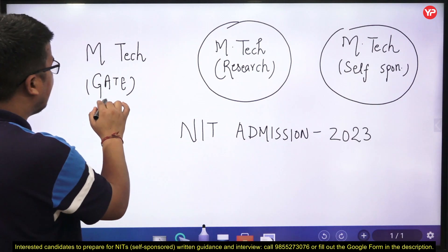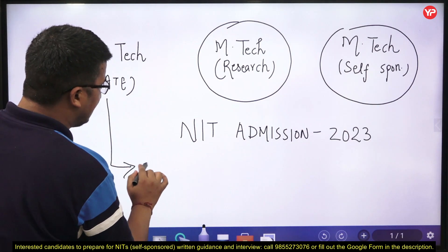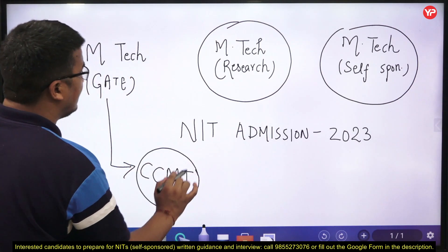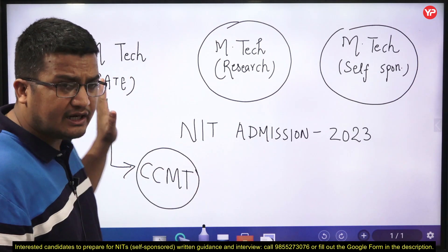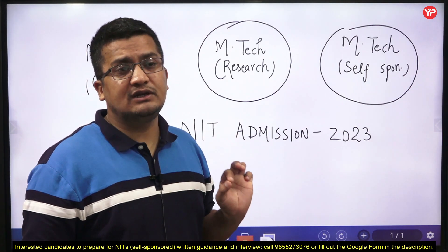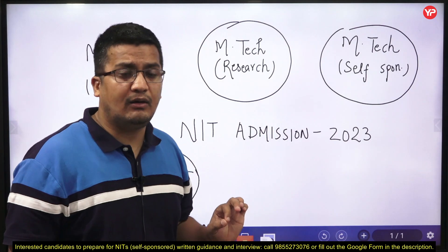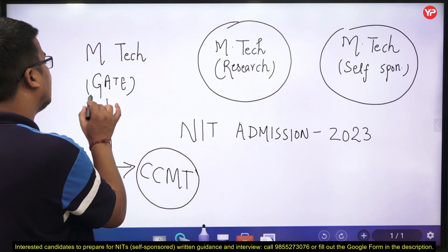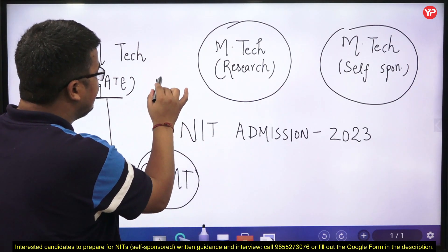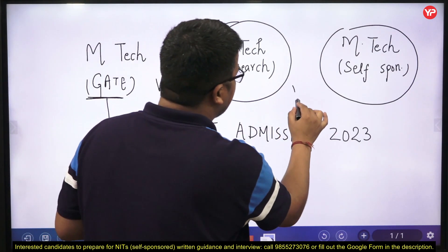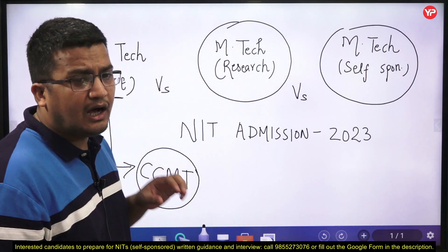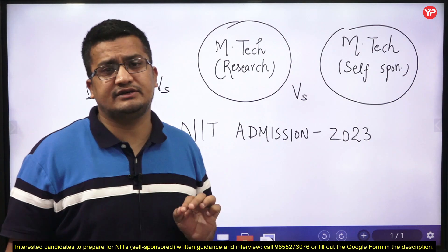If I talk about M-Tech through GATE, here you need to apply through a single window — that is the CCMT window. You do not need to apply separately to each NIT. You need to simply follow one centralized counseling process, the CCMT, and this is only for M-Tech courses and only through GATE. So, this is basically where the confusion arises, and I thought it is better to guide you on what is the basic difference and how you need to follow the structure for the coming NIT session.